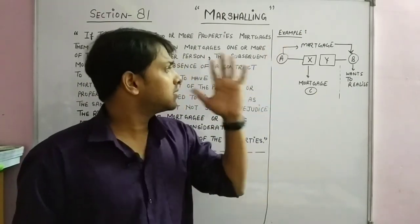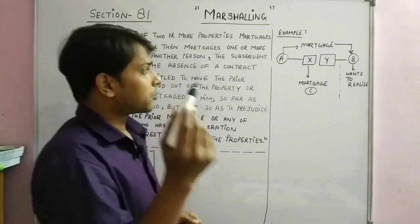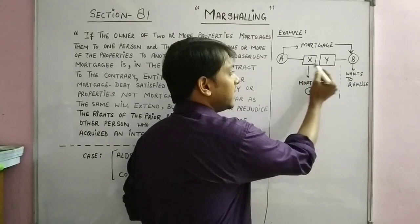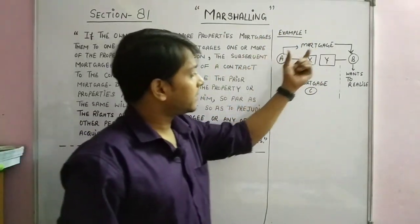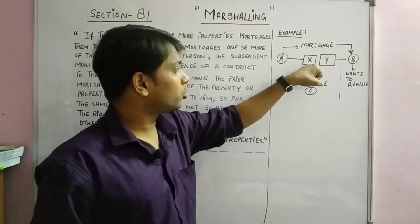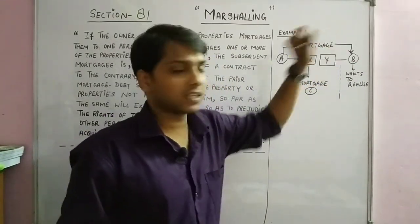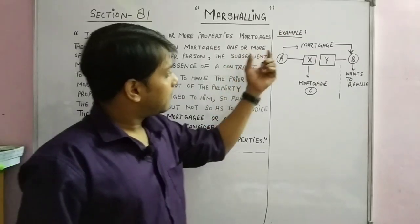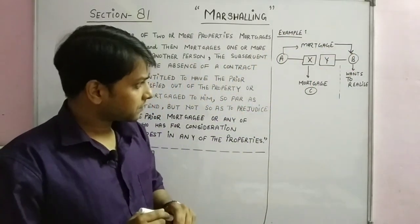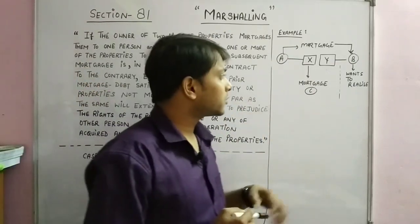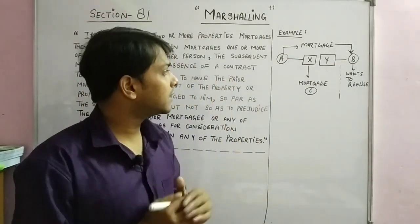Suppose there is a person A, and A has two properties: X and Y. A mortgaged both properties X and Y to B — that is Mortgage 1. In a mortgage, you give your land as security and take money for a certain time period.